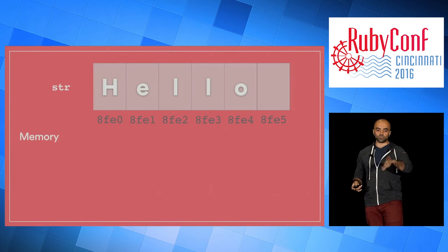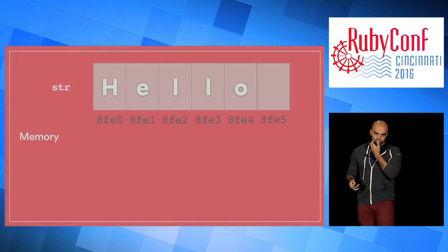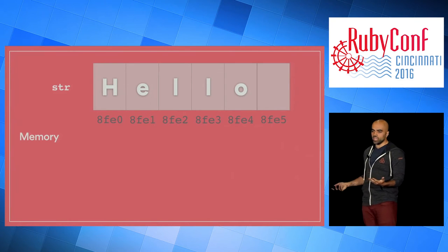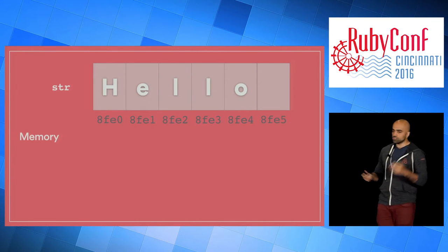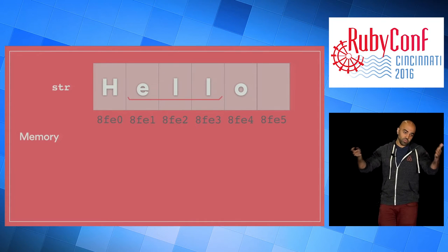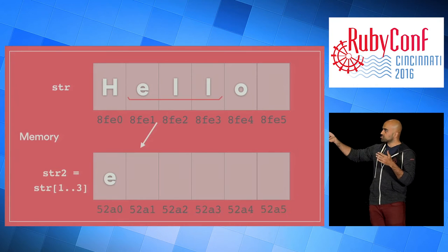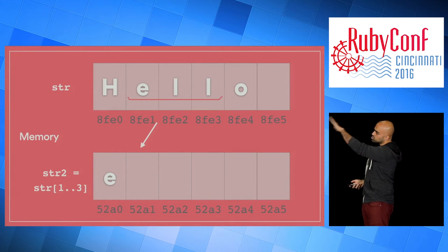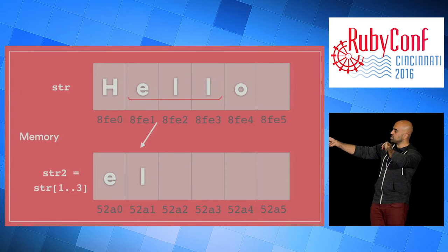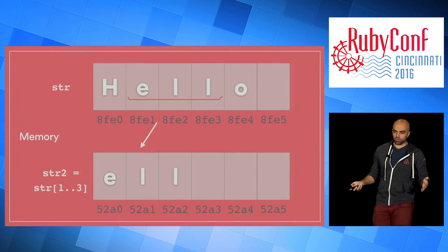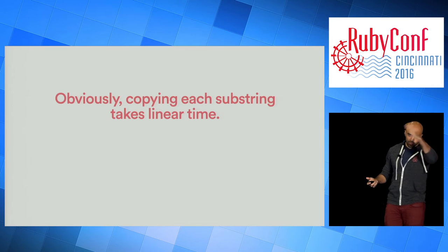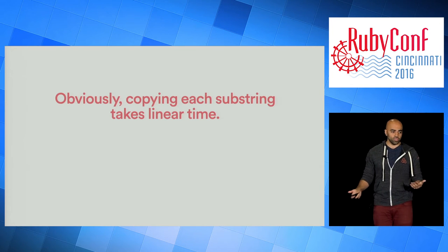With those caveats in mind, let's look at how strings are represented in Ruby. Ruby gives a lot of abstraction over what's really happening at the machine layer, but a string is really just an array of characters — adjacent in memory. To take the substring 'ell' and copy it somewhere else, we have to go to a new place in memory and copy each character one by one into new memory cells.